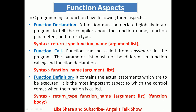The third aspect is function definition — it contains the actual statements which are to be executed. It is the most important aspect to which function control comes when the function is called. In the syntax, the return type represents your data type — what type of function you are using. The function name is the name you have given in the program. The argument list shows which parameters you are passing to the function, and the function body is where you write the entire function code.